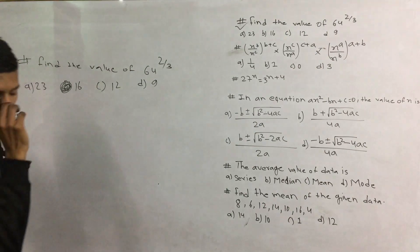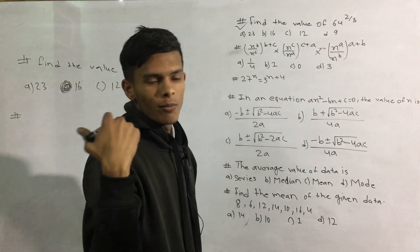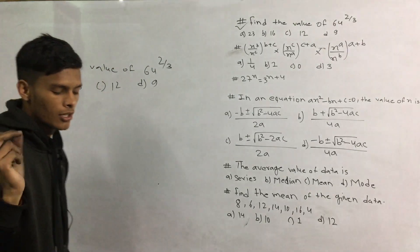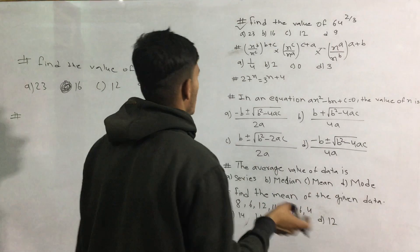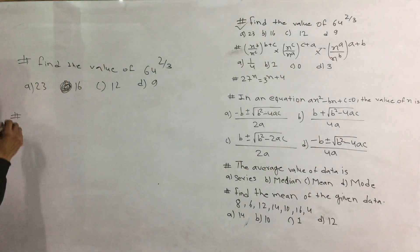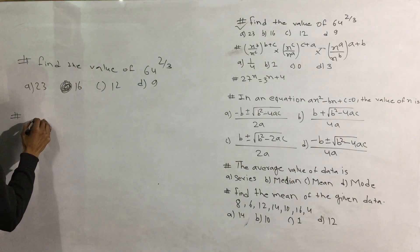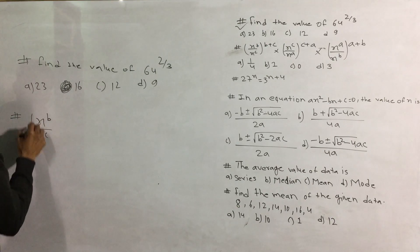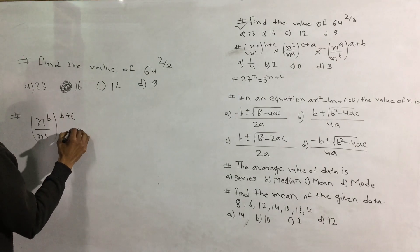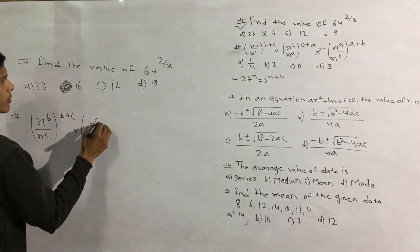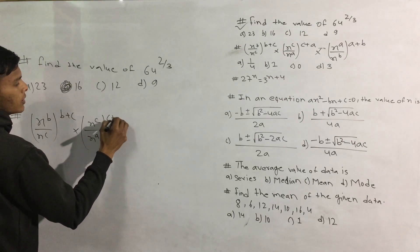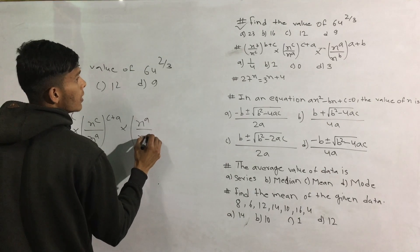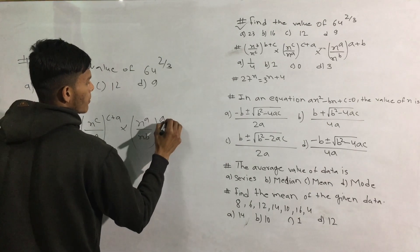The question is in English. Here are some questions. The question is: x to the power of b, x to the power of c, and b plus c is the same. Then x to the power of c divided by x to the power of a, c plus a, multiplied by x to the power of a divided by x to the power of b, and multiply a plus b.